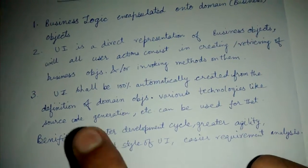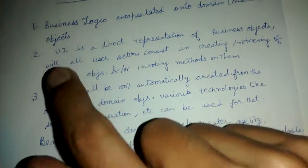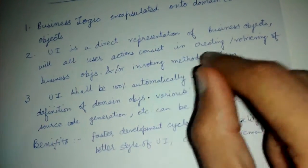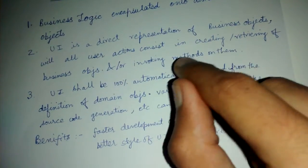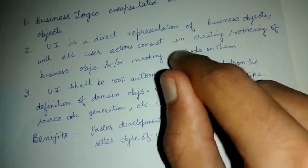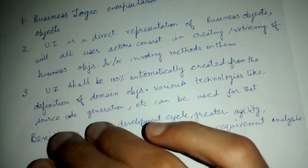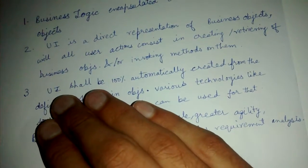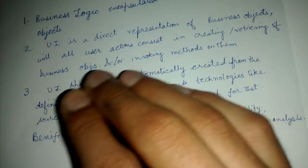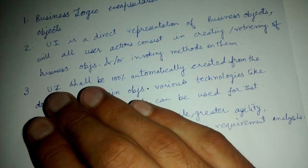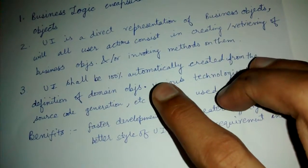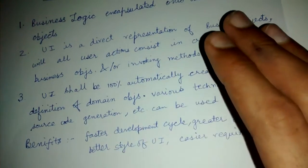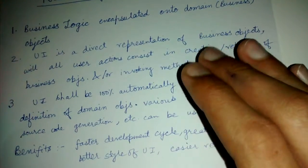The third point is that since the UI is simply creating business objects and invoking methods on them, these tasks are well-defined. We can write a tool that automatically generates the UI code. Hence, UI code generation can be automated — the UI shall be 100% automatically created from the definition of these domain objects.